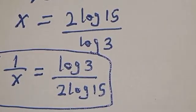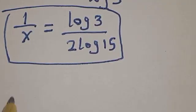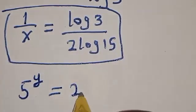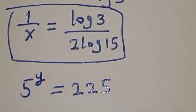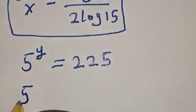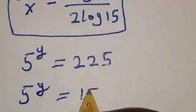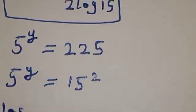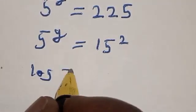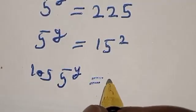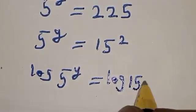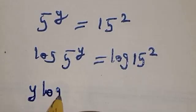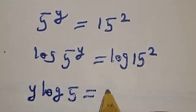Now let's solve for 1 over y. From equation 2: 5 raised to power y is equal to 225. Now 5 raised to power y is equal to 15 squared. Let's take the log of both sides: log 5 raised to power y is equal to log 15 squared. Then we have y log 5 is equal to 2 log 15.